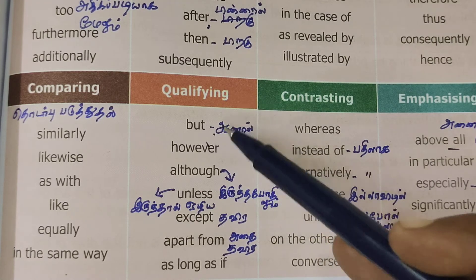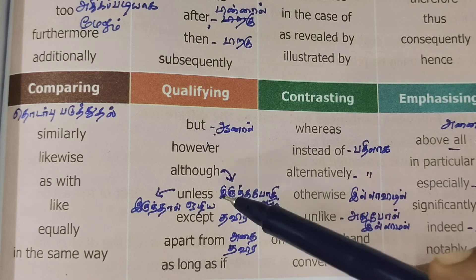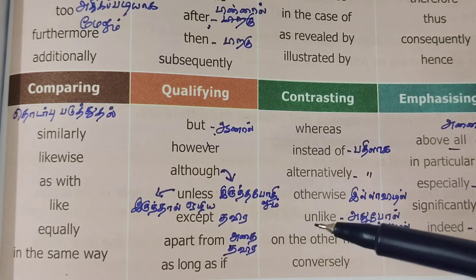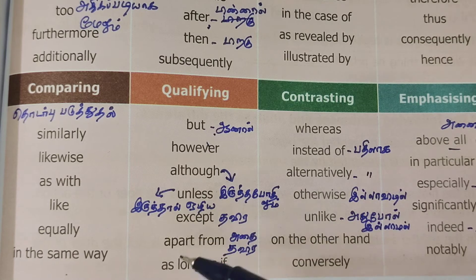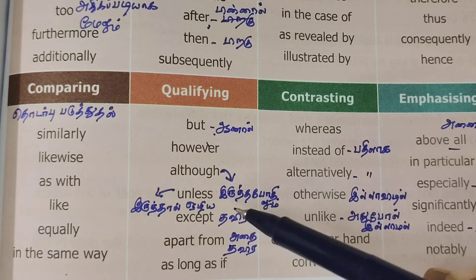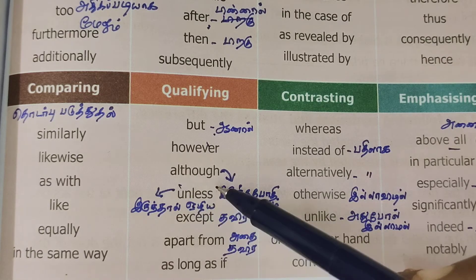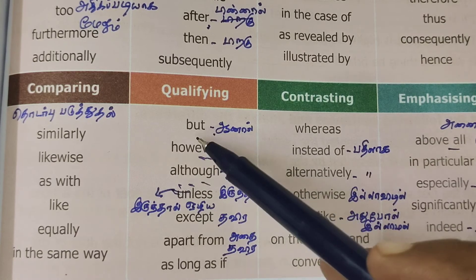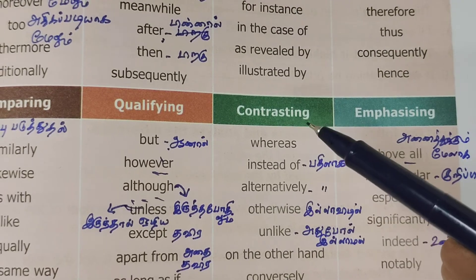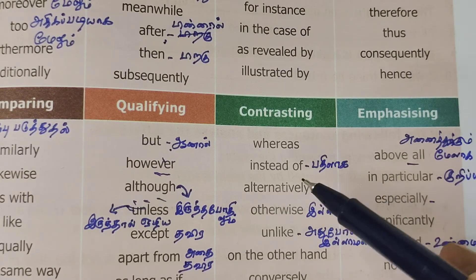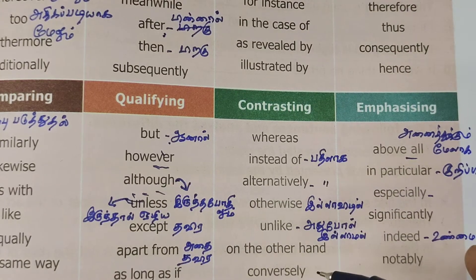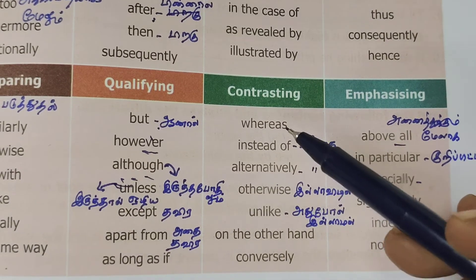Qualifying connectors: but, however, although, unless, except, apart from. Contrasting connectors: instead of, alternatively, otherwise, unlike, on the other hand, conversely, whereas. These are used to show contrast or qualification between ideas.